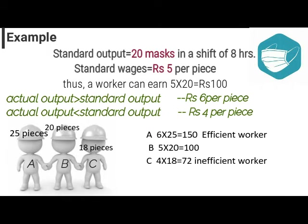Suppose there are 3 workers A, B and C. The production done by each of them is given. A has produced more than the standard units, so he will get wages at Rs 6 per piece and his wages would be 6 x 25, i.e., Rs 150. The wages of B will be Rs 100 and the wages of C will be Rs 72.